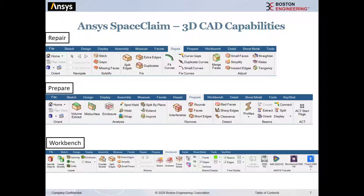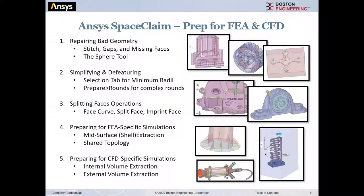On the Workbench tab there are unique capabilities when preparing to go into Workbench. Any geometry prepared in SpaceClaim can go straight into AIM, Mechanical, or Fluent. The top five topics I've highlighted for today are: bad geometry repair, simplifying and defeaturing, face splitting, preparation for structural analysis, and preparation for fluid dynamics analysis.